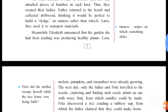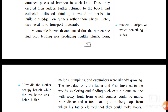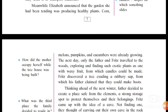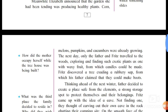Meanwhile, Elizabeth announced that the garden she had been tending was producing healthy plants. The mother was also doing a very good job by farming, which would help them with food. Corn, melons, pumpkins, and cucumbers were already growing.